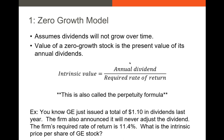Our zero growth model is very basic — we assume the dividend is just not going to change ever. To value that asset, say a stock, we just divide the dividend by the discount rate or required rate of return. This is our perpetuity formula. For example: GE issued $1.10 in dividends per share and announced it will never adjust the dividend. The firm's required return is 11.4%. The intrinsic price per share is simply $1.10 divided by 11.4%, giving us $9.65.